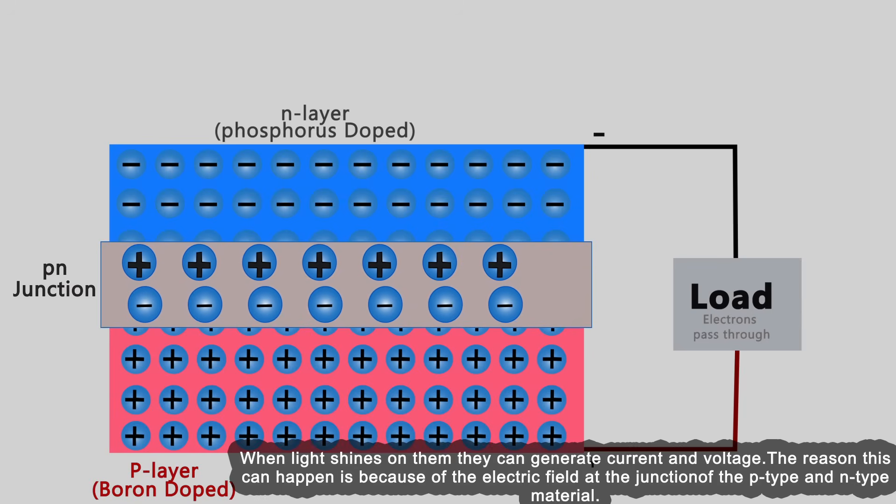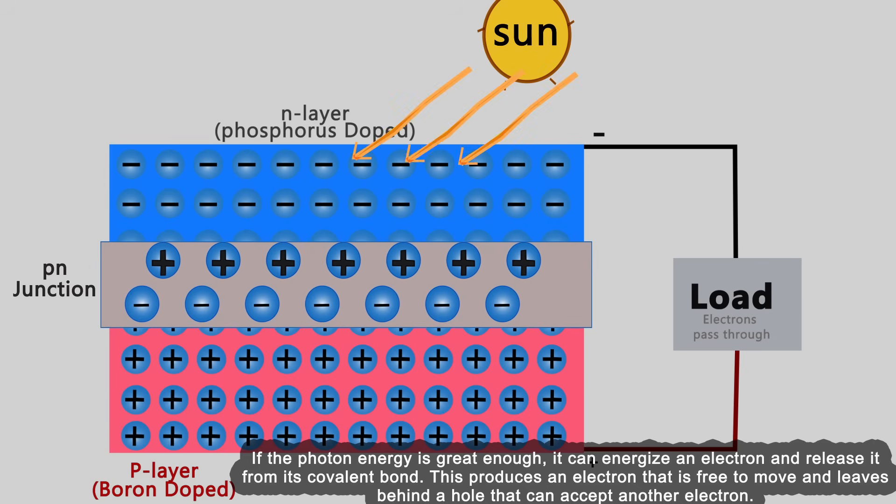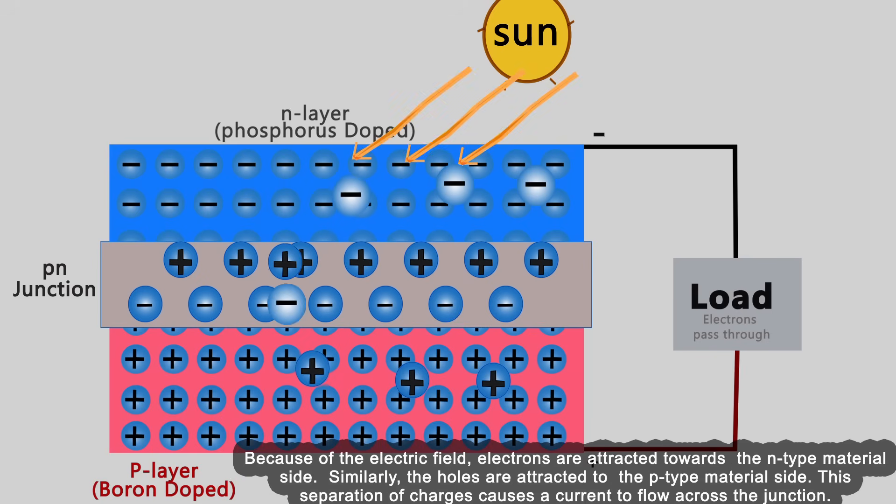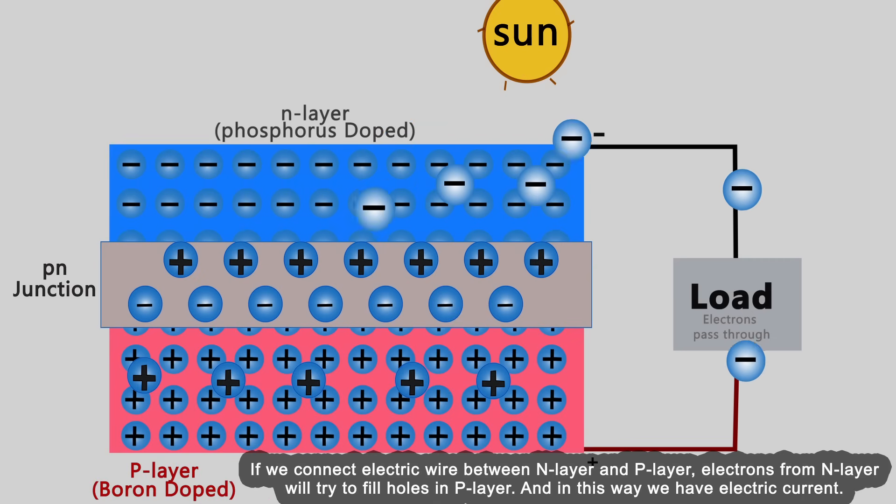When light shines on them, they can generate current and voltage. This happens because of the electric field at the junction of p-type and n-type material. If the photon energy is great enough, it can energize an electron and release it from its covalent bond. This produces an electron that is free to move and leaves behind a hole. Because of the electric field, electrons are attracted towards the n-type material side. Similarly, holes are attracted to the p-type material side. This separation of charges causes current to flow across the junction. If we connect an electric wire between n-layer and p-layer, electrons from the n-layer will try to fill holes in the p-layer, and in this way we have electric current.